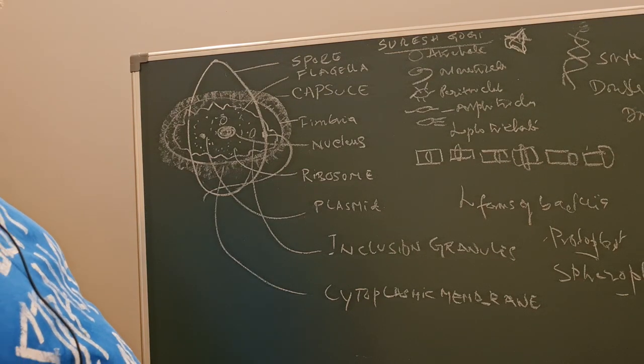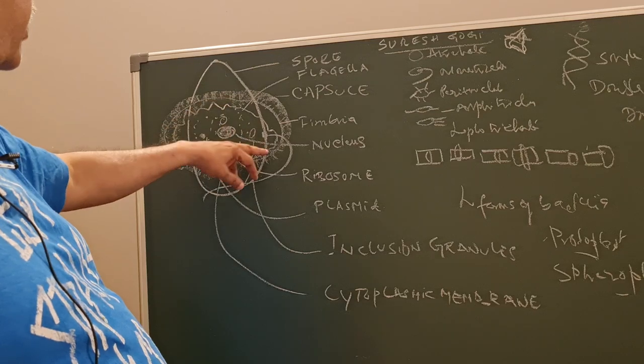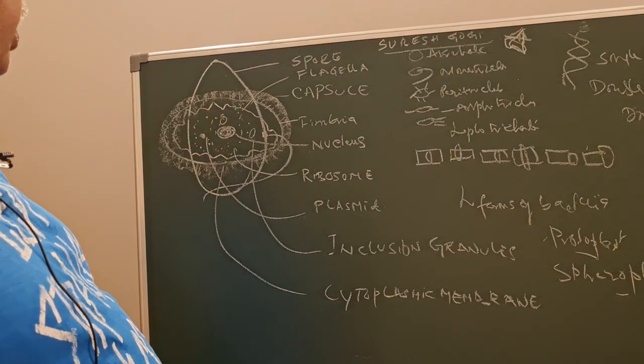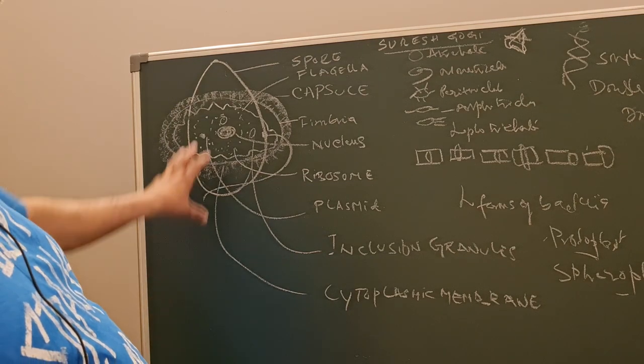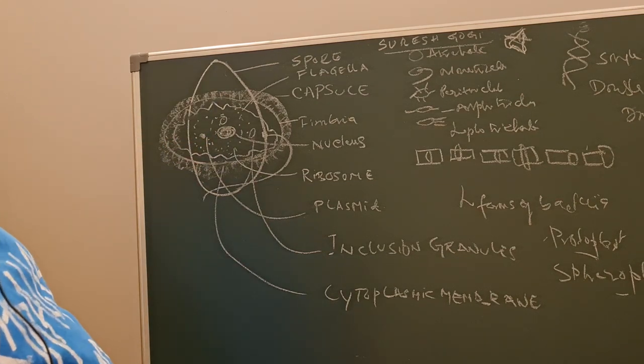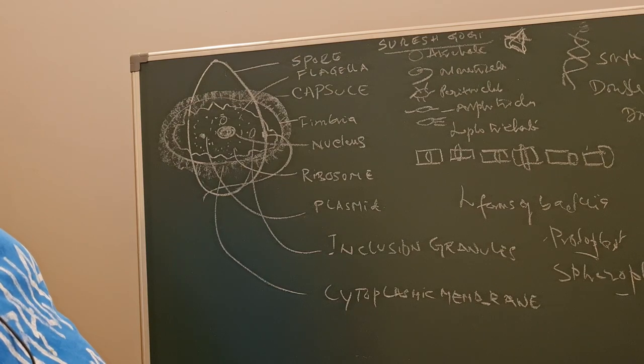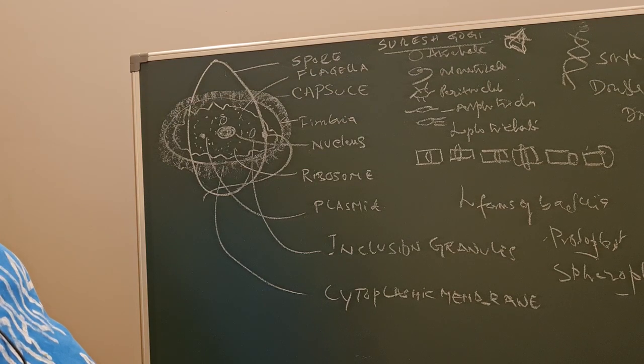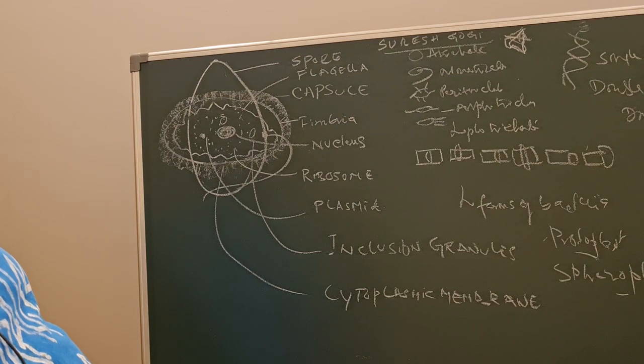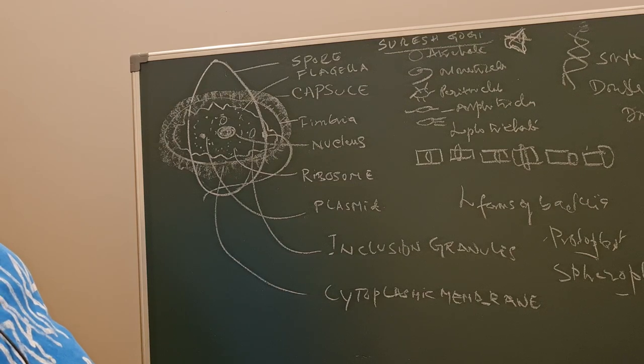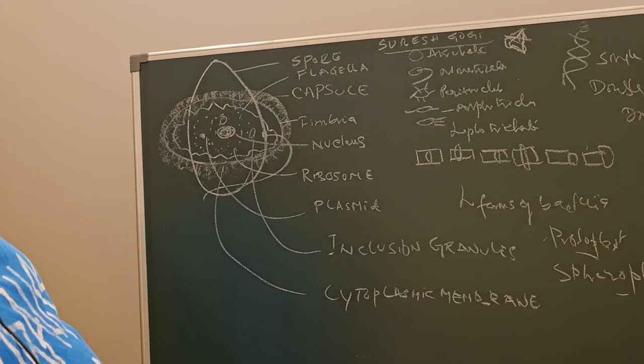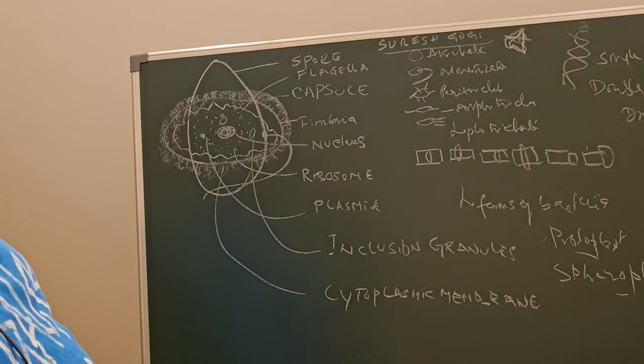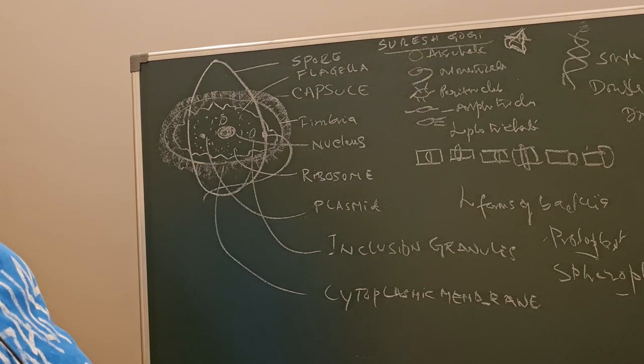Some capsulated organisms are made up of protein like anthrax, or carbohydrate in pneumococci. Under hostile conditions, bacteria undergo sporulation. Spore-bearing organisms are Clostridia, which form spores in absence of oxygen, and anthrax under aerobic conditions. Spores are the resting stage of bacteria.